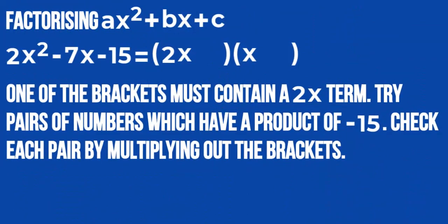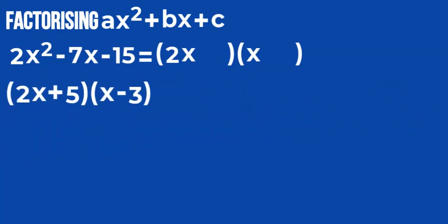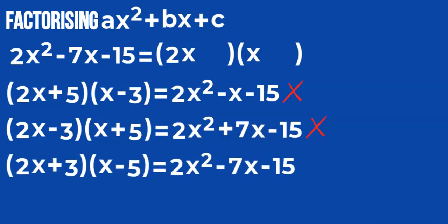Factorizing ax squared plus bx plus c. One of the brackets must contain a 2x term. Try pairs of numbers which have a product of minus 15, and check each pair by multiplying out the brackets. Here are some explanations.